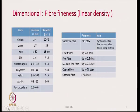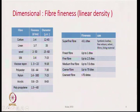We will now discuss the various attributes of fibers and their possible role. The first parameter is fiber fineness or linear density. A table shows typical fineness values for cotton, linen, wool, silk, viscose rayon, polyester, nylon, acrylic, and polypropylene, along with corresponding diameters in microns. Fibers can be classified as superfine, fine, medium-fine, coarse, and coarse-stressed.